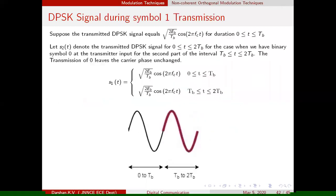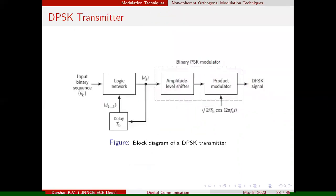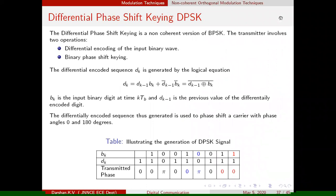The basic heart of DPSK is differential encoding and phase shift keying. As per the definition, DPSK involves two things: differential encoding and binary phase shift keying. Differential encoding is done using the XNOR logic, as explained in the following table.